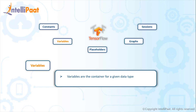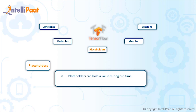In other programming languages, a variable's value can be changed at execution time, and the same is true in Python TensorFlow — a variable is a container for a data type, but you must initialize the data type while declaring it. Now, there is a slight difference between a variable and a placeholder: a placeholder is similar to a variable, but you do not need to declare its value at the initial stage.